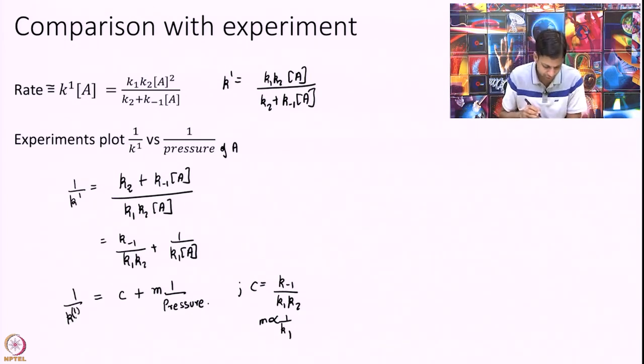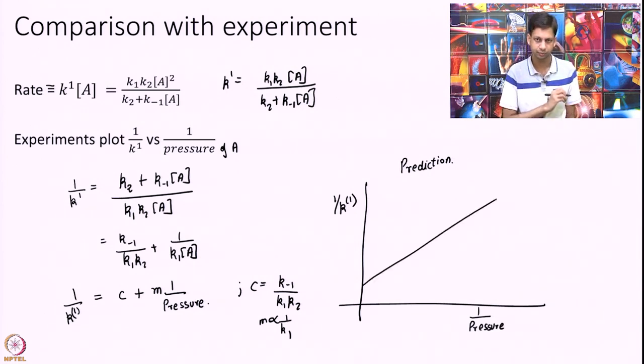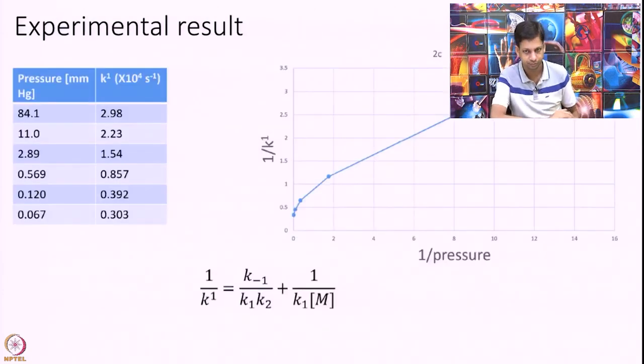You see what we have got is 1/K1 equals some Mx plus C where x is 1 over pressure. My prediction is at a given temperature if I plot 1/K1 versus 1/pressure I should get a straight line, correct. That is an equation of a straight line. This is the experimental result in front of you. I have actually taken the data and plotted it on some graph. This is not a straight line. It is clearly deviating. So we have a problem.